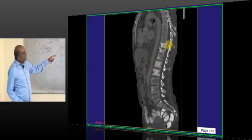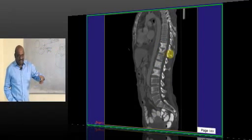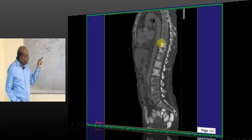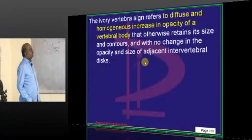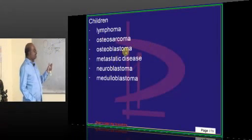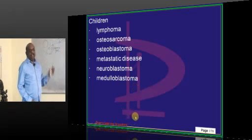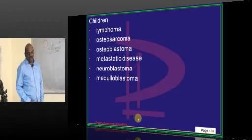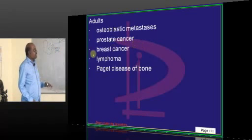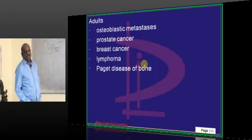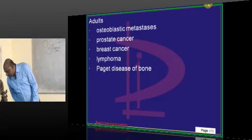This is an example of ivory vertebrae — are you able to see it like the tusk of an elephant? In children, lymphoma, osteosarcoma, blastoma, metastatic disease, neuroblastoma, or medulloblastoma can all lead to ivory vertebrae. In adults, any osteoblastic metastasis — prostatic cancer, breast cancer, lymphoma, or Paget's disease — can cause ivory vertebrae.